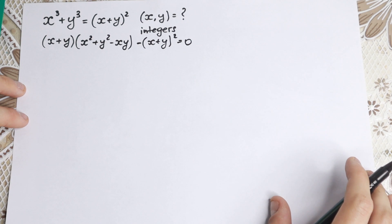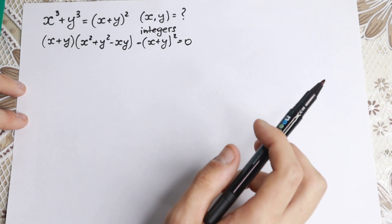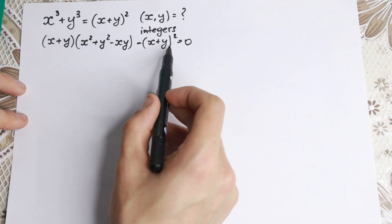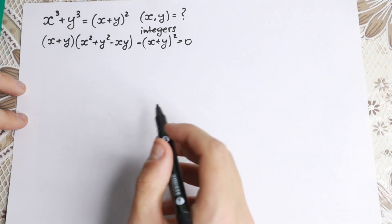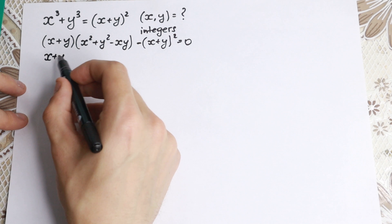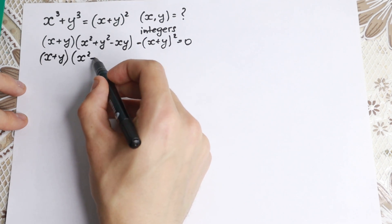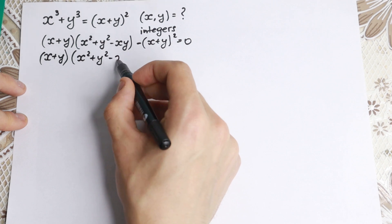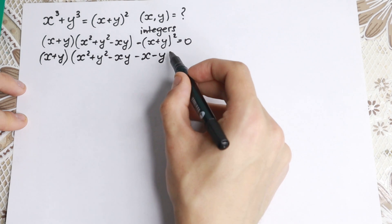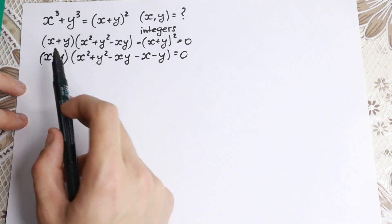I hope you understand this step — applying the formula and bringing this to the left hand side. If you look closely, we have (x+y) and (x+y) right here, so we can easily factor it out. We factor out (x+y). We have x times (x+y), and in the second parentheses x² plus y² minus xy, and of course minus x minus y, if we open our parentheses, equal to 0. So right here we just factor out (x+y).